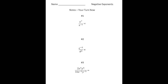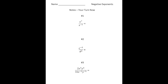Welcome back. Let's see how you did with these practice problems. Number one: we have x to the seventh over x to the negative fifth power. We need to make this negative five a positive, so we move it up to the top. That gives us x to the seventh times a positive x to the fifth, which gives us x to the twelfth.